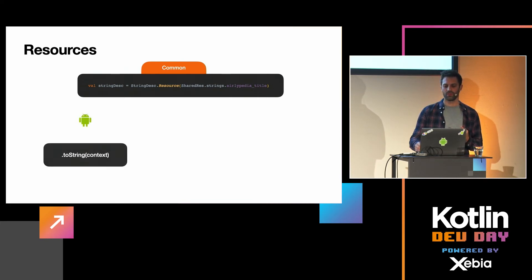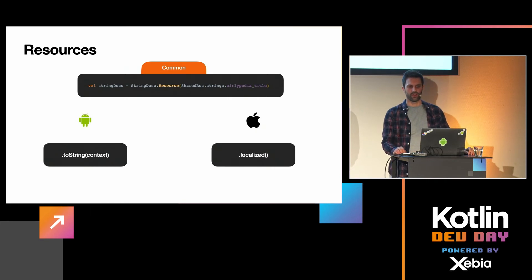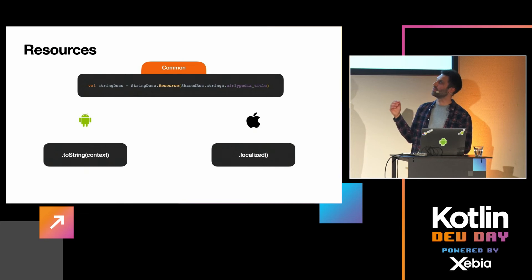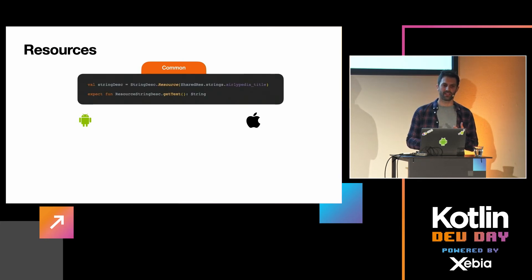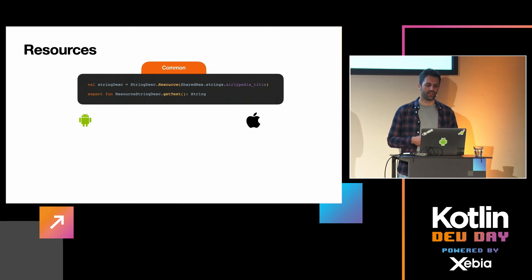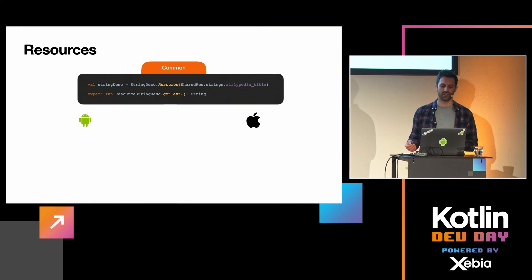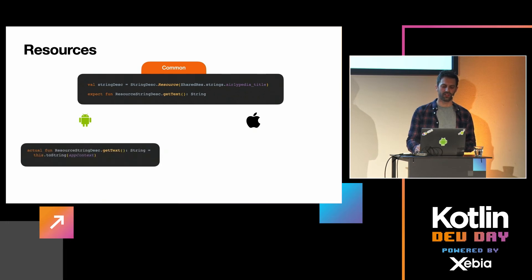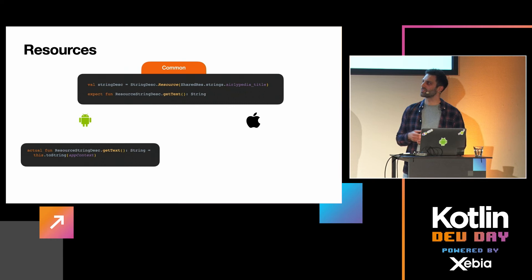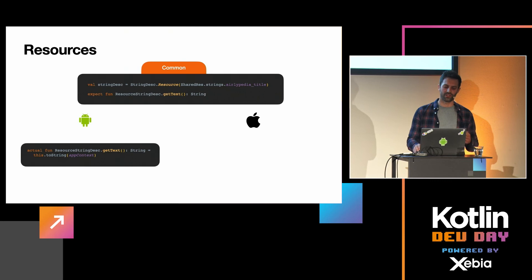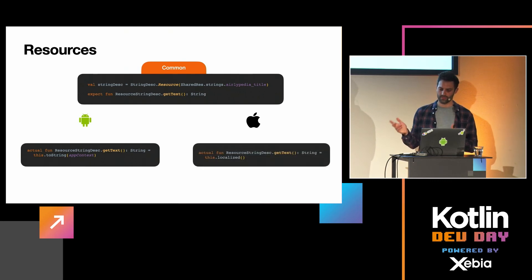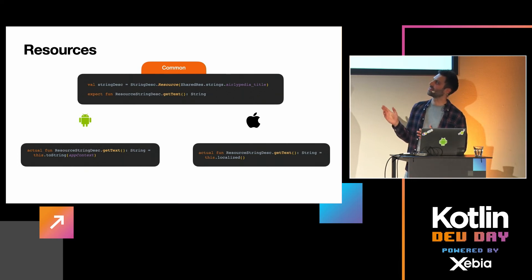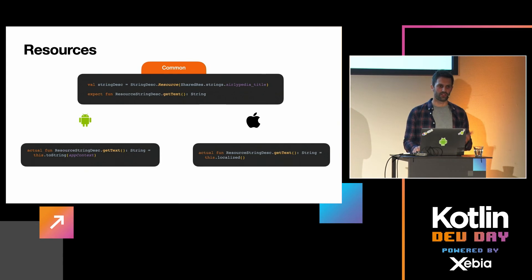We can also get localized strings from the shared module. To do that, we add toString(context) for Android and .localized for iOS — but since these are platform-specific, we can't use them directly in common code. So we use the expect keyword: we take a StringDesc class from Moko Resources and define an expect function getText. Then for Android we provide an actual extension function on StringDesc using the app context, and for iOS we add .localized. Whenever we call getText from shared code, we receive the properly localized string for each platform.